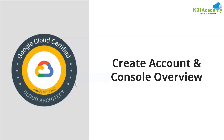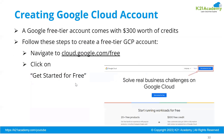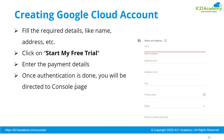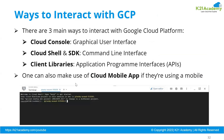We saw how to create an account with a step-by-step procedure using a credit card. There are three ways to interact with GCP: the console, Cloud Shell and SDK, and client libraries via APIs. A mobile app is also available to manage GCP resources, though we won't use it in demos.